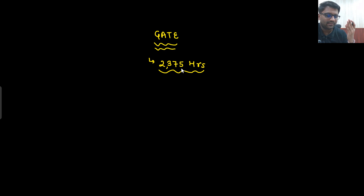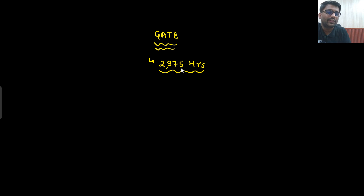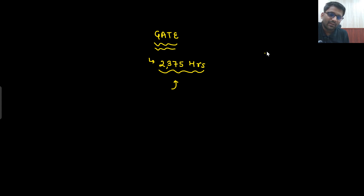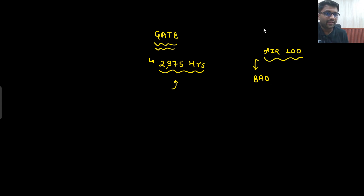If you want to prepare in a good manner — right from zero, no dropping subjects, no crash course shortcuts, fully dedicated — this is how much time you should devote. An average student putting in 2375 hours of effort would surely be able to get under AIR 100 even on a bad day. On a good day, they can do wonders. But hardly 70–80 people are able to put in this kind of effort.